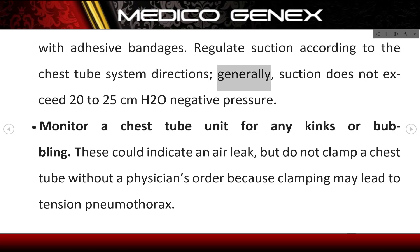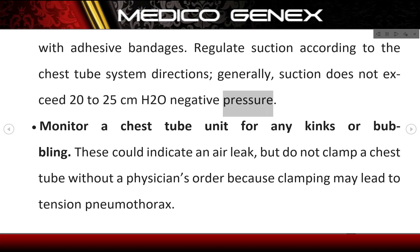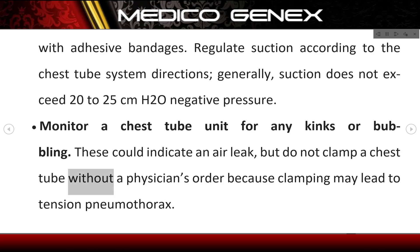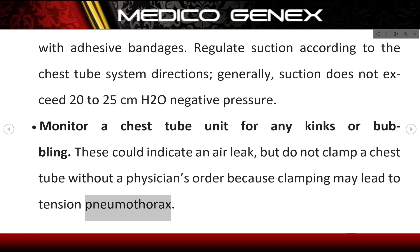Generally, suction does not exceed 20–25 cm H2O negative pressure. Monitor a chest tube unit for any kinks or bubbling, as these could indicate an air leak. Do not clamp a chest tube without a physician's order, because clamping may lead to tension pneumothorax.